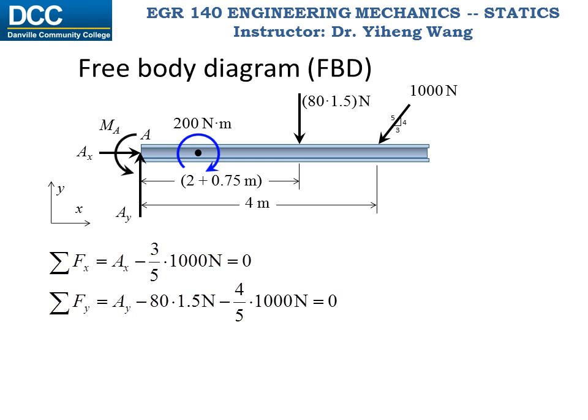Lastly, we write the resultant moment equation. Note that you can sum moments about any arbitrary point, but you should always try to find the best point to reduce the number of unknowns in your equation. For this problem, it is best to sum moments about point A, because unknown forces Ax and Ay both have lines of action passing through point A. Therefore, they don't create any moment about point A and would not appear in the moment equation. Also, when writing the moment equilibrium equation, remember that moment is about a z-axis pointing out of and perpendicular to the xy-plane, so positive moment creates counterclockwise rotation and negative moment creates clockwise rotation.